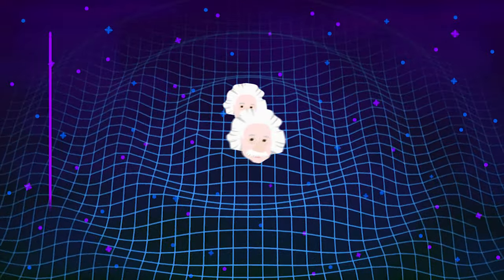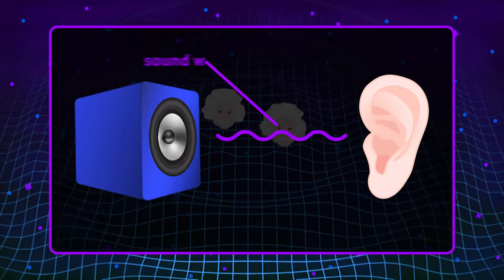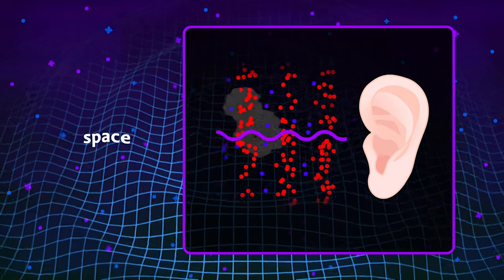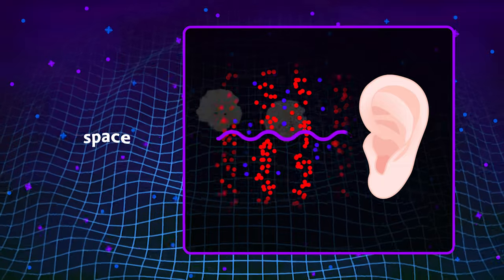Similarly to how sound waves travel out of your speakers by vibrating the air through which they propagate, gravitational waves propagate by vibrating the space itself.